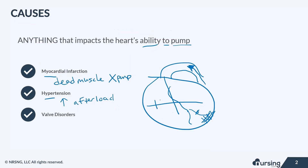And then with valve disorders, if this is our valve and either it's having issues getting blood forward or it's regurgitating backwards — so regurgitation or stenosis — basically what we're seeing is the blood's not getting where it's supposed to go. So you see congestion and backup of flow because the blood's not going forward. Anything that affects the heart's ability to pump can effectively cause heart failure.